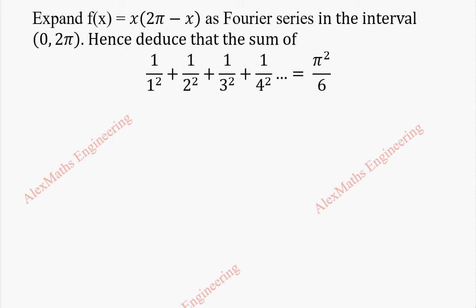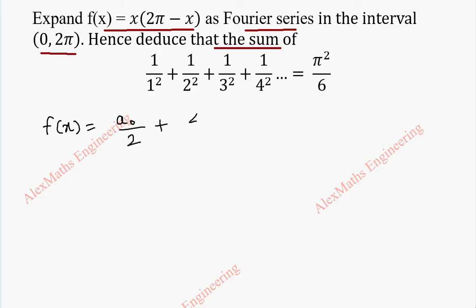Hi students, this is Alex. In this video we are going to expand f(x) = x(2π - x) as a Fourier series in the interval (0, 2π), and after that we are going to deduce the sum of the series. As a first part, we are going to write the formula for f(x) as a Fourier series: a₀/2 + Σ(n=1 to ∞) aₙcos(nx) + Σ(n=1 to ∞) bₙsin(nx).